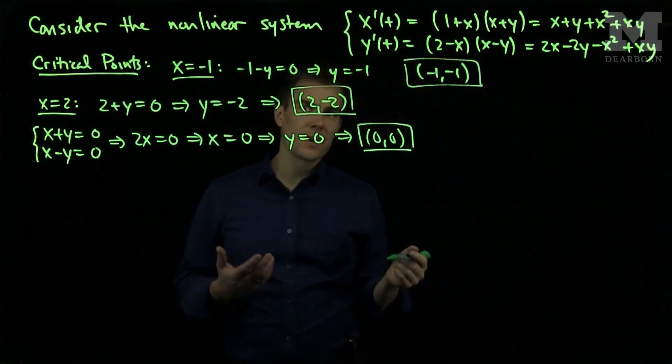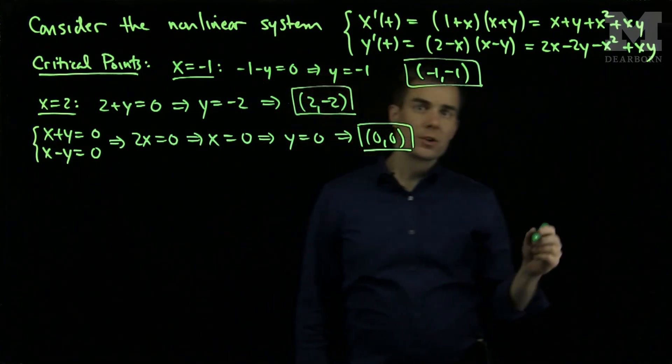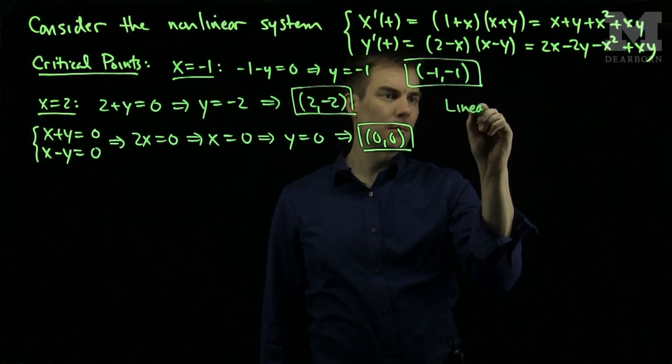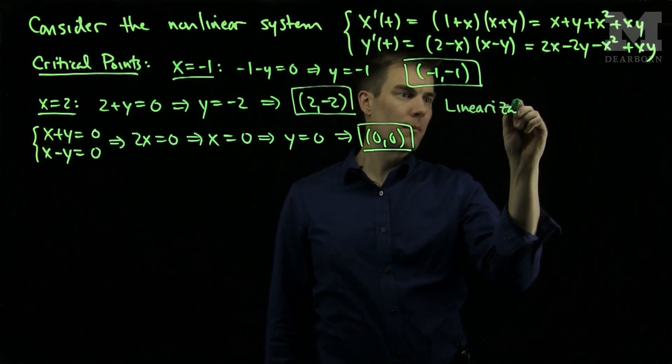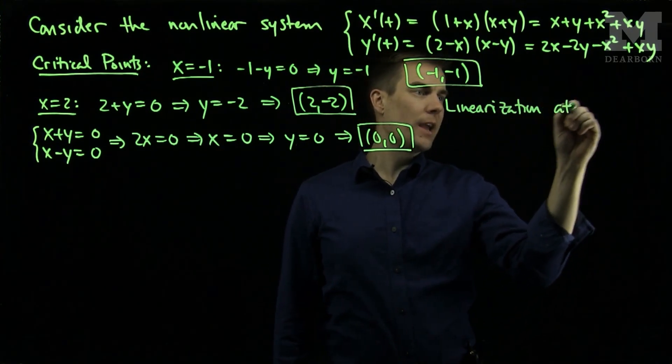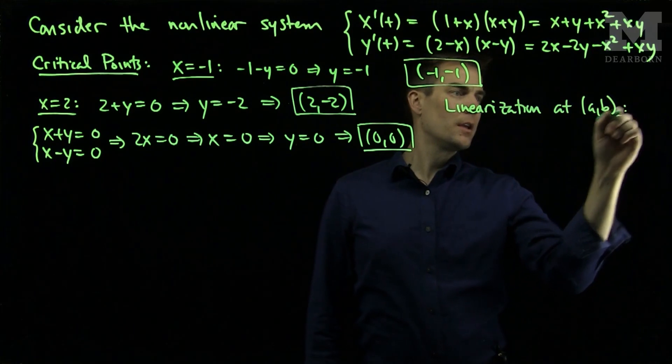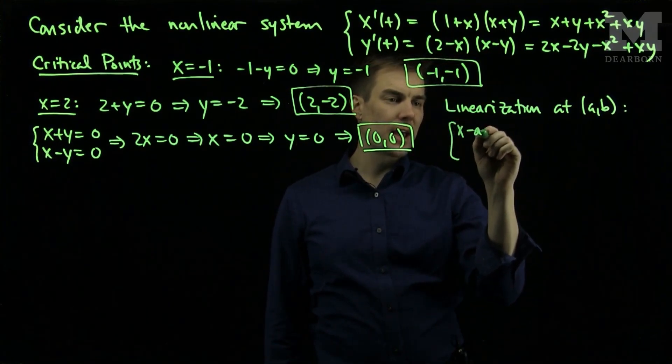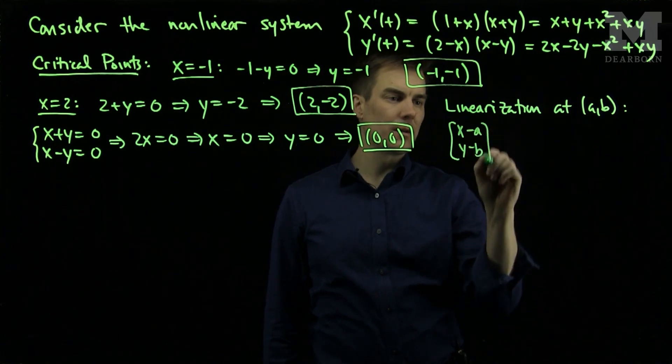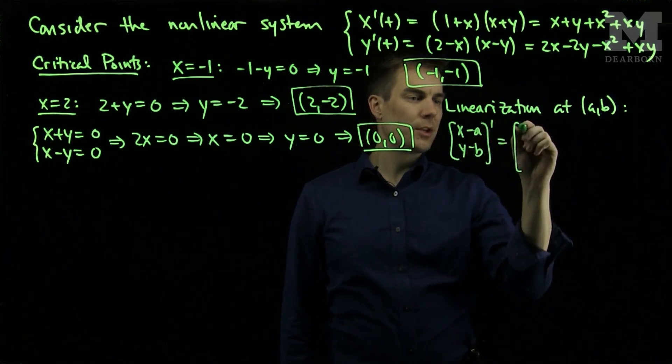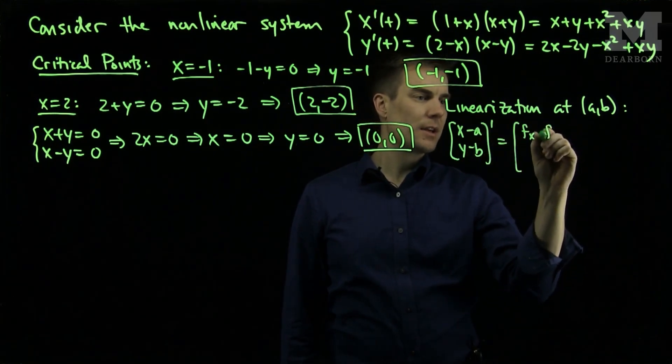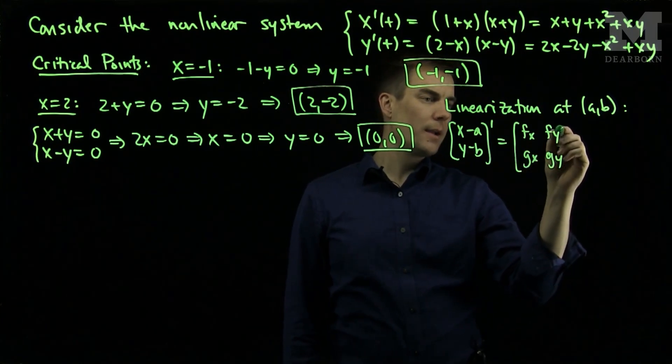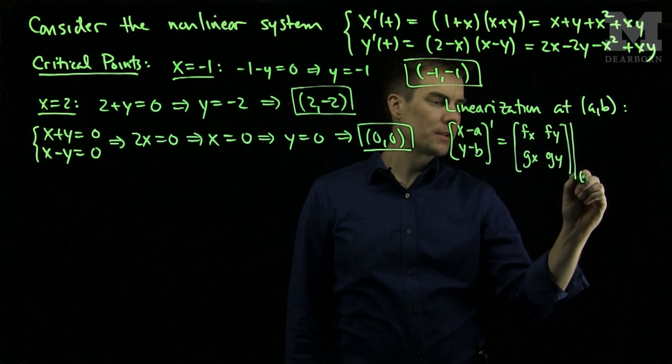And I will classify their stability by linearization. So recall now that the linearized system at a point AB is the following approximate system. It is x minus A, y minus B prime is the matrix FX, FY, GX, GY at the point AB.